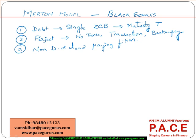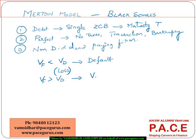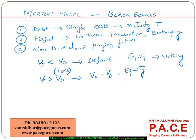On top of these assumptions, at any point in time if the value of the firm is less than the value of the debt, the firm is going to default and the difference between the two is the loss absorbed by the debt investors. If the value of the firm is greater than the value of the debt, the difference is the value paid to equity investors. In the first case equity investors receive nothing; in the second, debt investors receive the full principal and equity investors receive the balance.